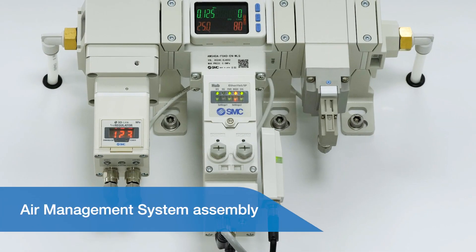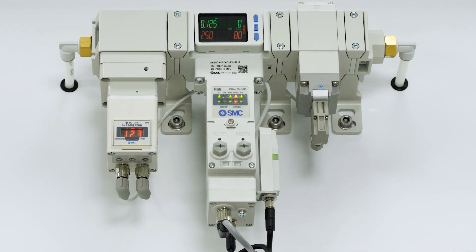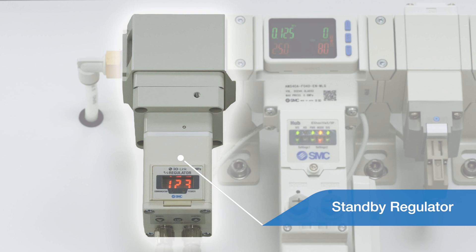Here we have a typical air management system assembly which is made up of three main components. The first component is the standby regulator which can be a manual or electroneumatic type. In this instance we can see the electroneumatic type. Either option can be used to control the supply pressure to the machine.